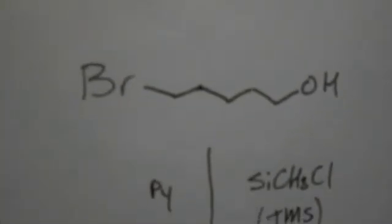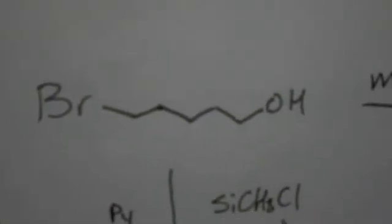So to review again, when you have a molecule that has bromine and alcohol, and you want to get rid of the bromine, you first have to use a protecting group. In this case, it's TMS, and then after you use a protecting group, you use a Grignard reaction to get rid of the bromine.